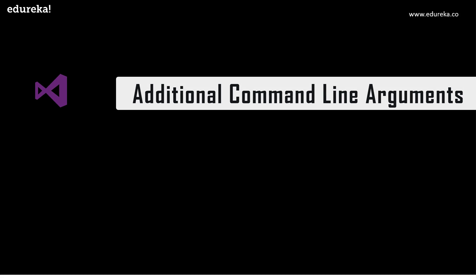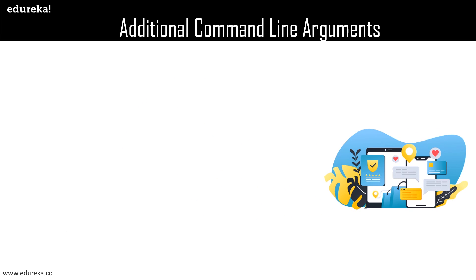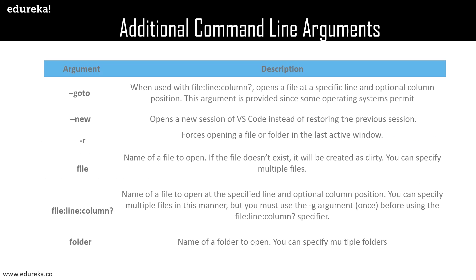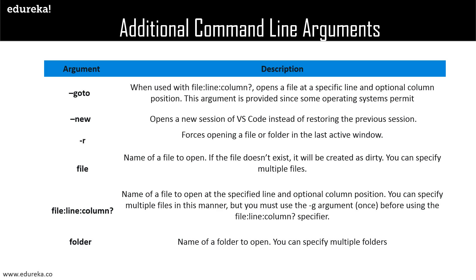Now let us learn about additional command line arguments in Visual Studio. Additional command line arguments are special keywords which have special functionality. The table here explains a few of them. Firstly, we have 'goto' — when used with a file, line, and column, it opens a file at a specific line and optional column position. Then we have 'new', which opens a new session in Visual Studio instead of restoring the previous session. Then we have 'reuse' (-r), which forces a file or folder to open in the last active window.